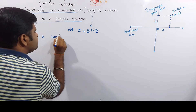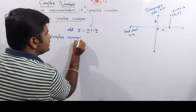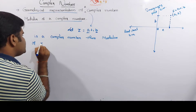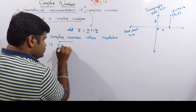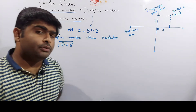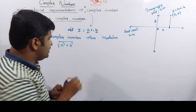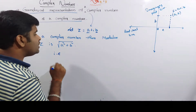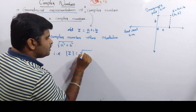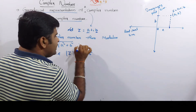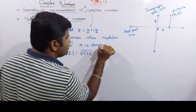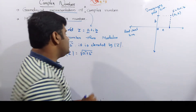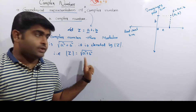Now for the complex number, we have the modulus. The modulus of z is defined as the square root of a squared plus b squared. This is denoted as the modulus of z, which equals the square root of a squared plus b squared.